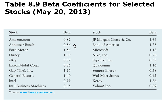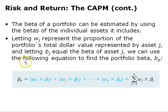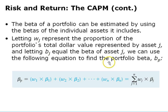Here are some betas of actual stocks as of May 2013. Some stocks have a lower beta and some have a higher beta, depending on how their stock price moves over time relative to the market. To calculate a weighted beta for a portfolio, we take the weight of each stock — say 25%, 50%, and 25% — and multiply by each stock's beta, then add those together to get the portfolio beta. It's nothing more than the weighted average of the betas in the portfolio.